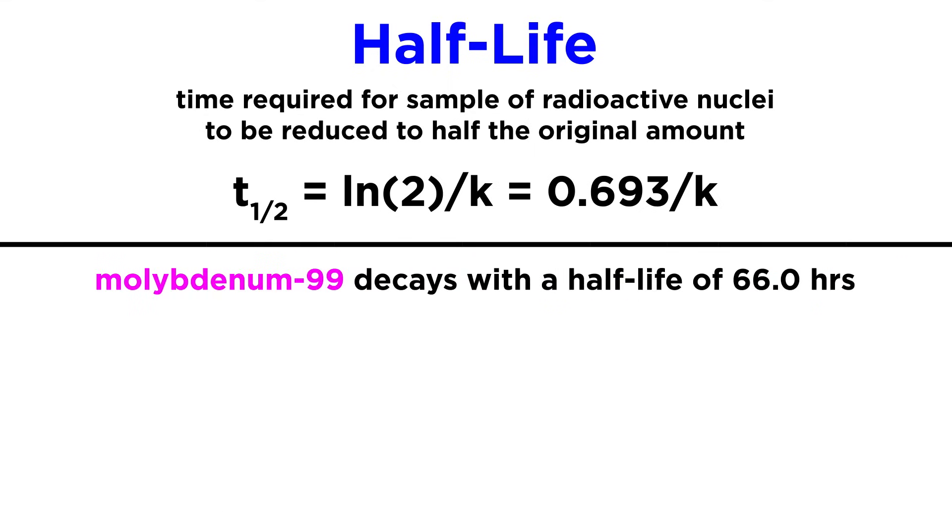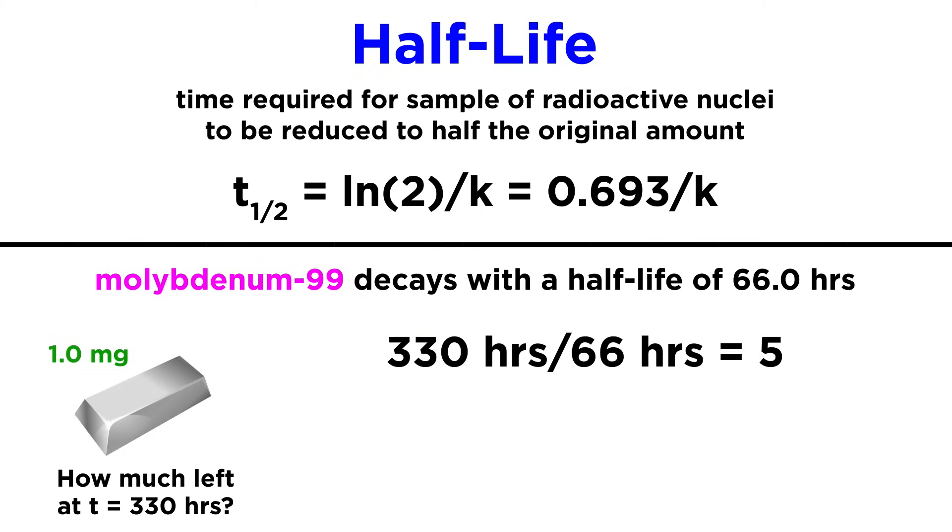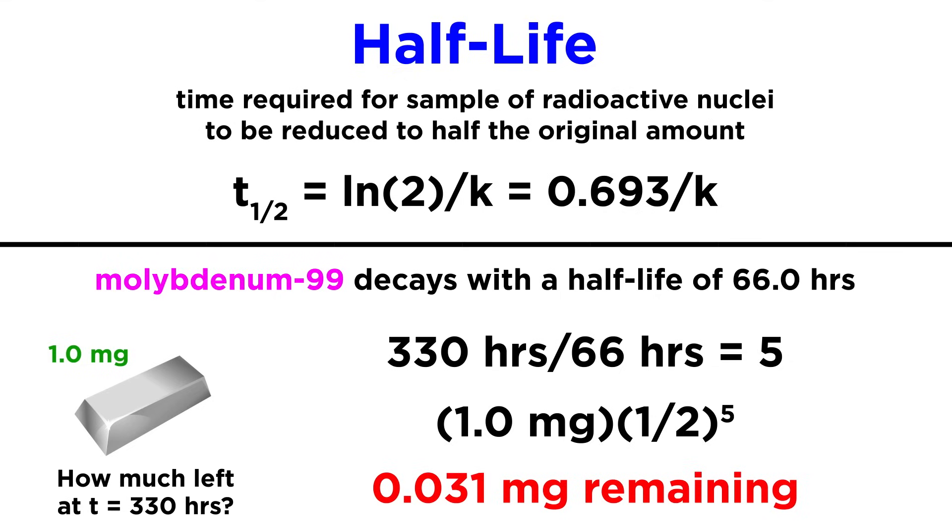Let's try one more problem. The half-life of molybdenum-99 is 66 hours. How much of a one milligram sample is left after 330 hours? Well, how many half-lives does 330 hours represent? If we divide 330 by 66, we see that this is five half-lives. So all we have to do is cut the original sample in half five times. That will leave us with 0.031 milligrams remaining.